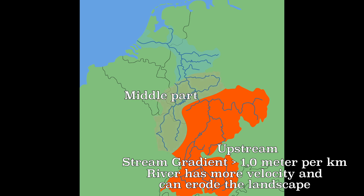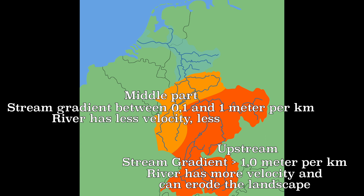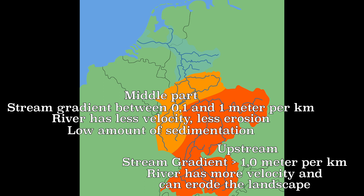Then comes the middle part of the river. This is the area where the stream gradient is usually between 0.1 and 1 meter per kilometer. Due to the lower stream gradient, the river has less force, so there is less erosion. At the same time, the river is not yet flowing slowly enough for sedimentation. For the Rhine, this is the area from Bingen to Cologne.